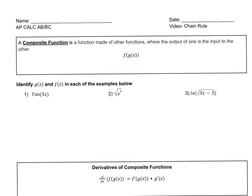In these three problems, I have three composite functions, and I want you to tell me which one is your g of x — your inside function — and which one is your f of x — your outside function. For the first one, g of x, the inside function, is 3x. The outside function, f of x, is simply tangent of x. It just so happens that x is now 3x. So those are your two functions.